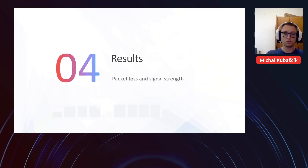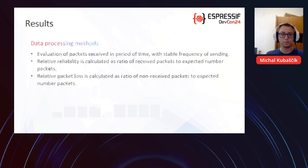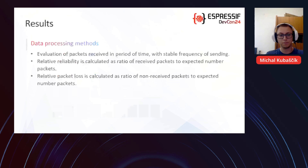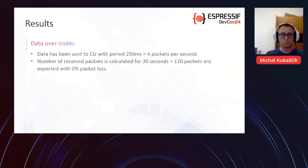Now for the results — evaluation of packet loss and signal strength. Evaluation of packets was done by counting packets in a period of time with a stable sending frequency. Relative reliability is calculated as a ratio of received packets to expected packets, and packet loss is calculated as a ratio of non-received packets to expected packets. Packets were sent every 250 milliseconds — basically 4 packets per second.